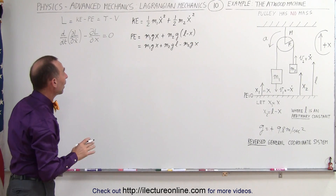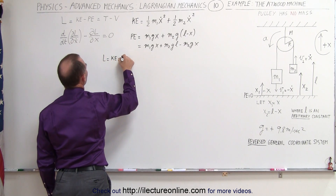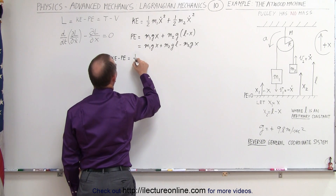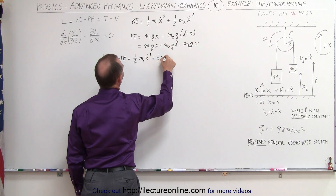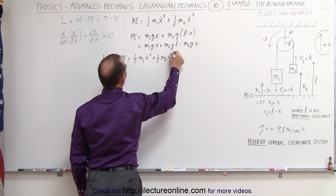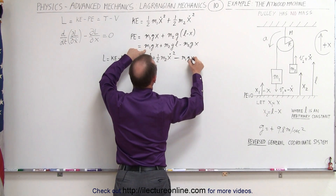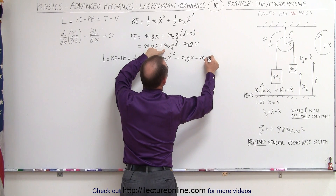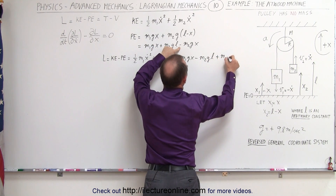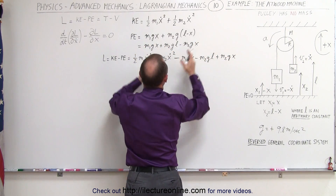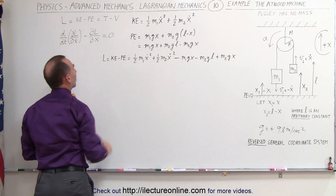Now we're ready to write the Lagrangian. The Lagrangian is equal to the kinetic energy minus the potential energy, which is equal to one-half m1 x-dot squared plus one-half m2 x-dot squared, minus m1gx, minus m2gL, plus m2gx. Since we're subtracting the potential energy, all the signs change.